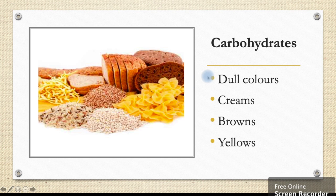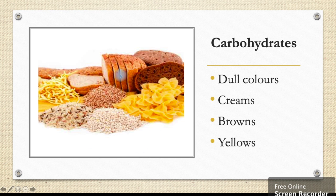Next we have carbohydrates. If we look at this image it's full of dull colours — creams, browns, yellows. This helps us identify carbohydrates. Another helpful tip is these are the things that usually fill us up in our meal.